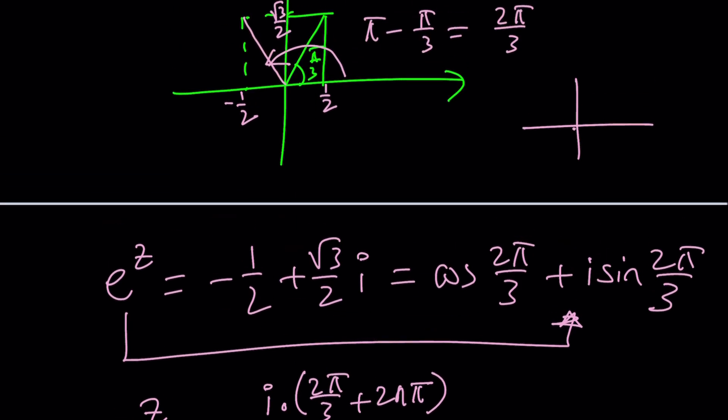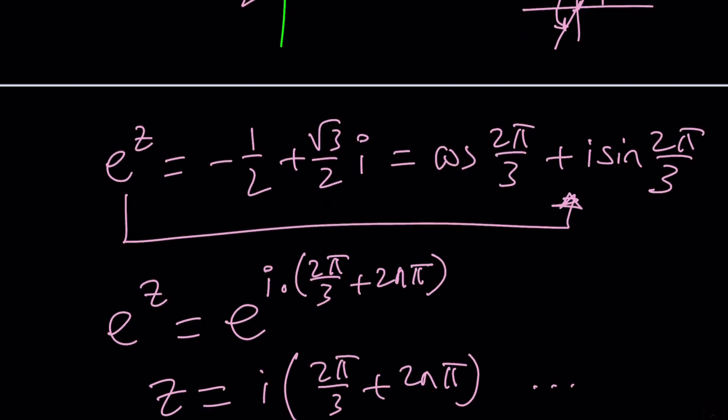So you just need to extend it like this. And that's just going to be pi plus pi over 3. And that's going to be 4 pi over 3. And you're going to be doing the exact same thing. Make sense? It should be fairly easy.